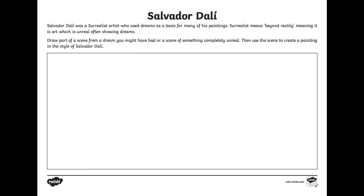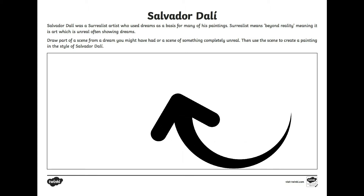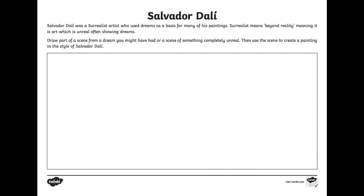To close the final art task for this term, your task this week is to draw part of a scene from a dream you might have had, or a scene of something completely unreal. Your picture can be created in any art media material you choose and should be skillfully drawn using the full amount of white space provided on the worksheet.